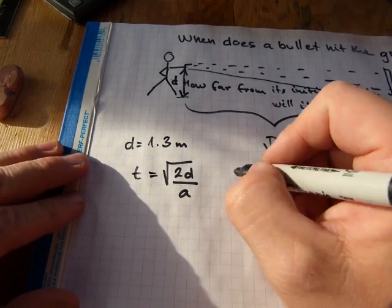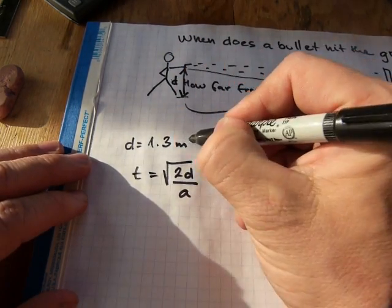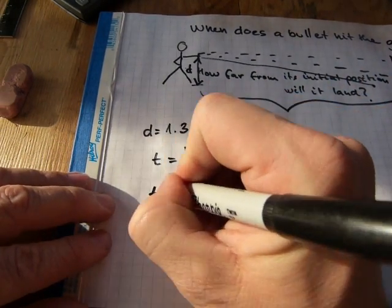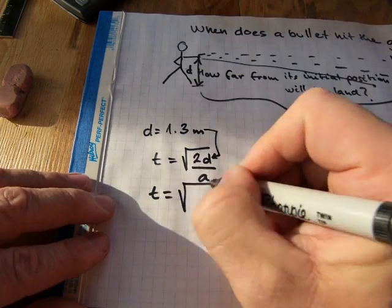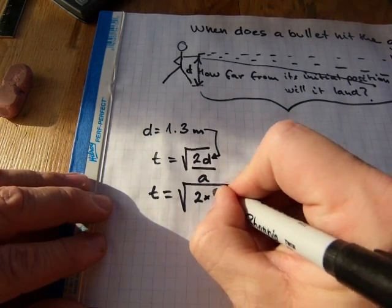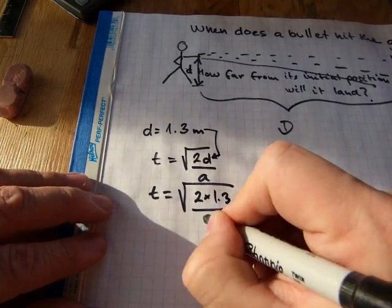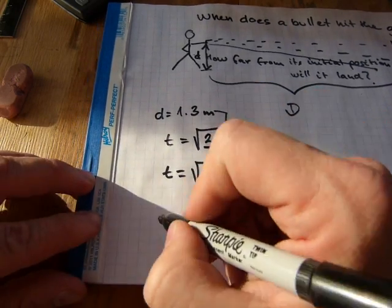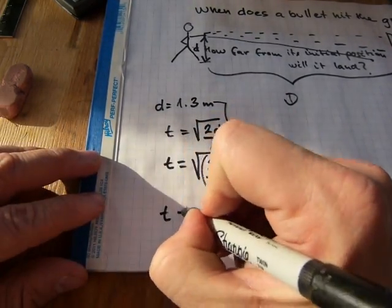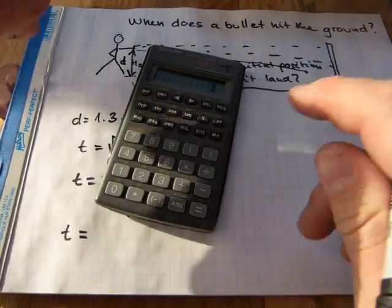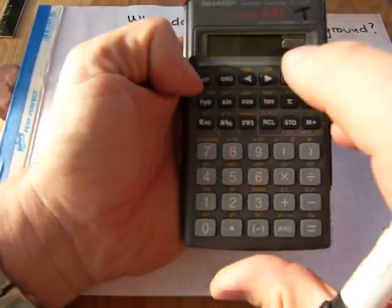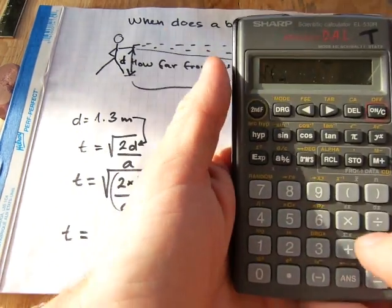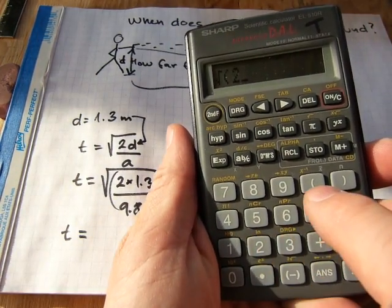And plugging in that number there into the equation, we get time equals square root of two times 1.3 divided by 9.8, and square root the whole thing. So the time it takes equals, let's go, I don't know if you can see this, square root, bracket, two times 1.3 divided by 9.8, close the bracket.